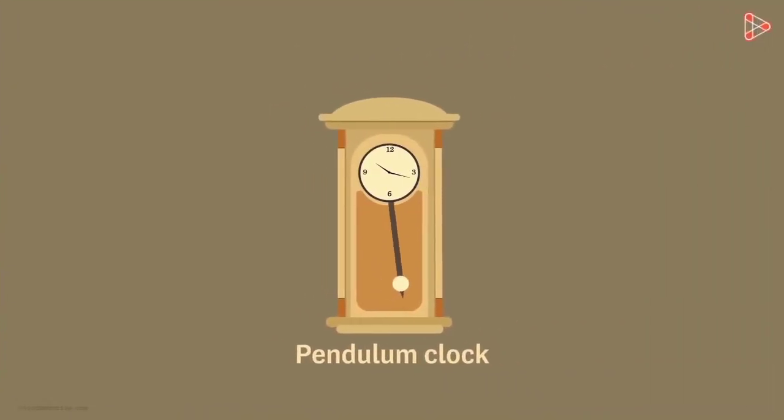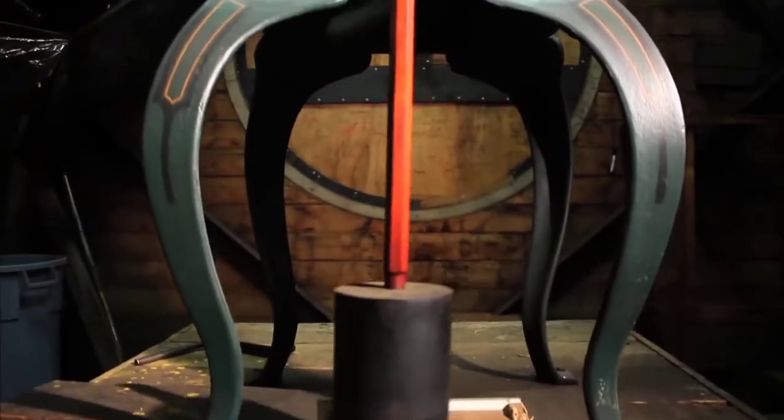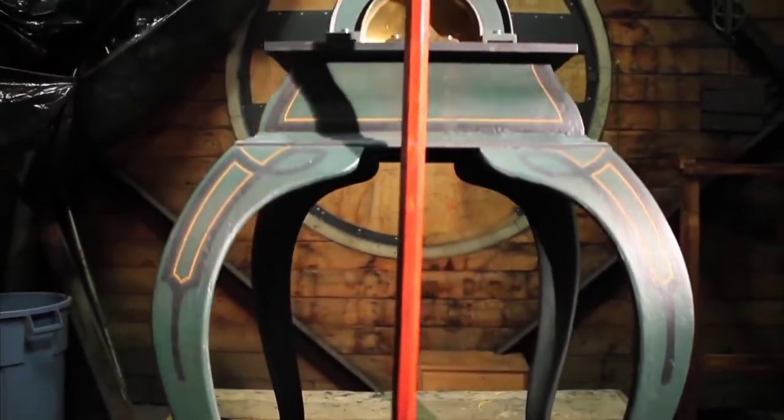For example, in a pendulum clock, the clock keeps track of time by counting the oscillations of the pendulum. In such situation, pendulum is the oscillator and one swing of pendulum is the oscillation.